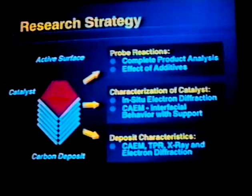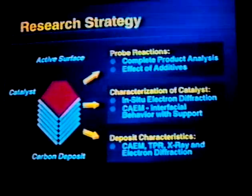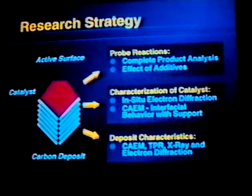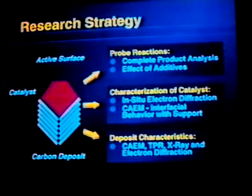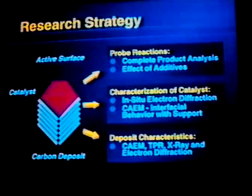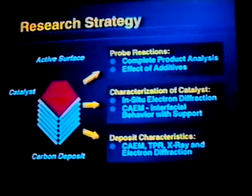Listed on the right are the various techniques we're using to look at those three interfacial regions. We use a probe reaction — a simple hydrocarbon molecule; ethylene is the one I'll talk about here — and we analyze the total products, both gas phase and solid carbon, as a function of reaction conditions. We also look at the effect of additives to the metal on those product distributions. We characterize the catalyst primarily by in-situ electron microscopy, actually doing the reaction inside the microscope — not in a reactor on the side and then transferring it in. It's all conducted in the microscope, so we can visually watch the carbon forming and analyze the particle while it's reacting, using the electron diffraction mode.